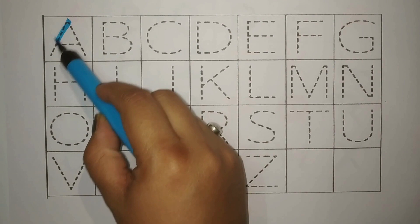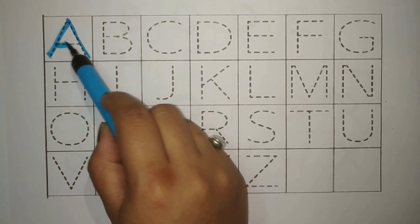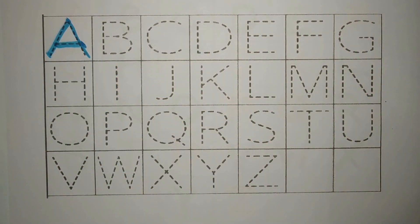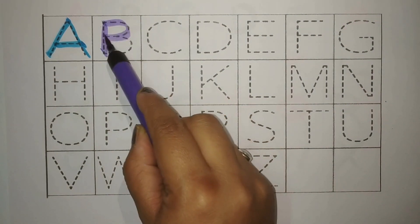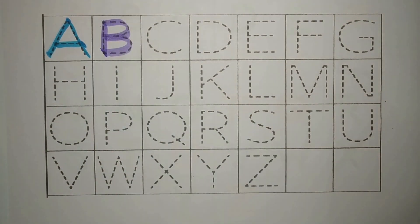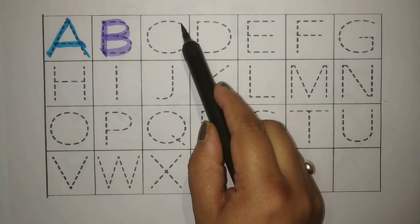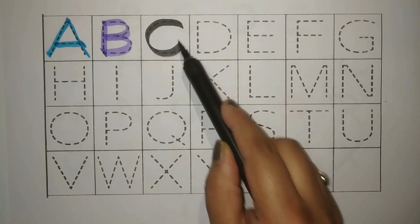Blue A for Apple. An apple a day keeps the doctor away. Purple B for Ball. I have a colourful ball. Black C for Carrot, Gajar.